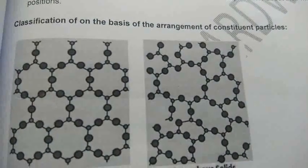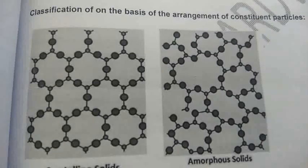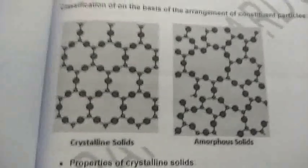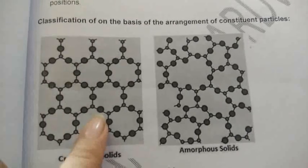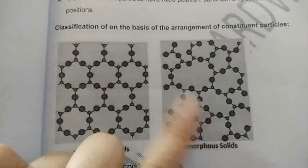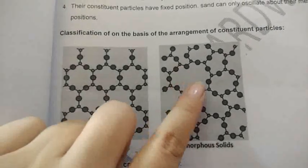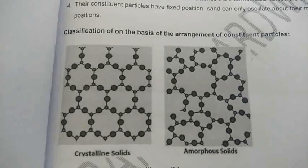Next comes the classification — how the constituent particles are arranged. Constituent particles are the particles which make that particular solid. On the basis of constituent particles and their arrangement, solids are of two types: crystalline solids, which have perfect crystalline geometry, and amorphous solids, which do not have any perfect geometry. Amorphous means shapeless — not having a proper, perfect shape.